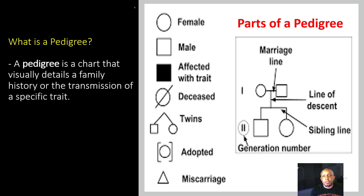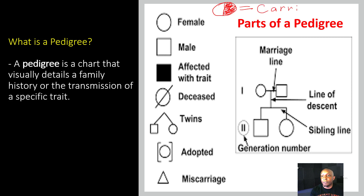First, if you notice, a female is going to be identified by a circle and a male is going to be a square. An individual affected with a certain trait is actually going to be shaded in — so it can be a shaded-in square or a shaded-in circle. Now it's also important to note that an individual who is a carrier for a certain trait is going to be half shaded in. This is a circle — and I know my circle is ugly — but this represents a female who is a carrier for a certain trait.